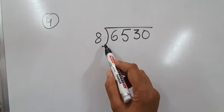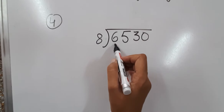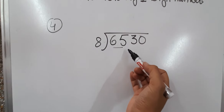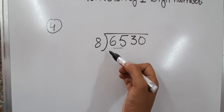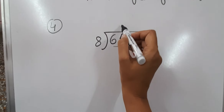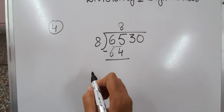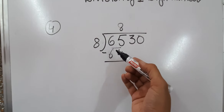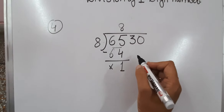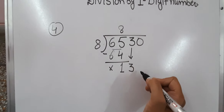Now let's take one more example: 6530 divided by 8. Since 6 is smaller than 8, we will take 65 together and start our division. 8×8 is 64, which is exactly smaller than 65. After subtracting we get 1 here. We put 0, and this 3 will come down.